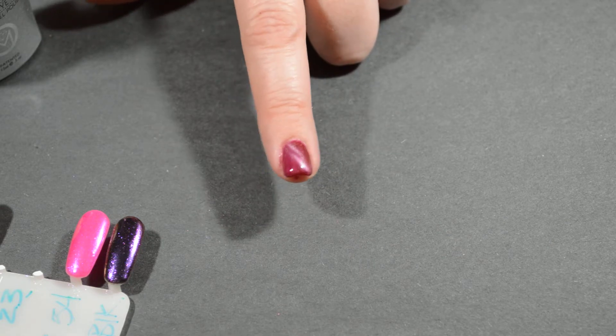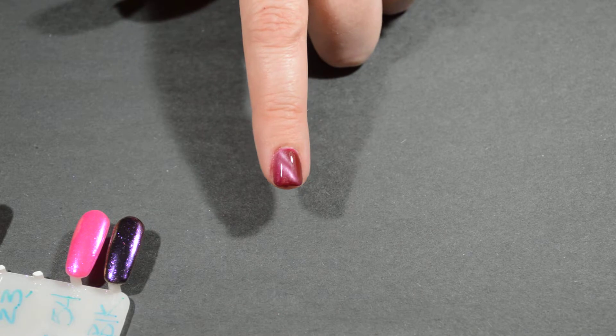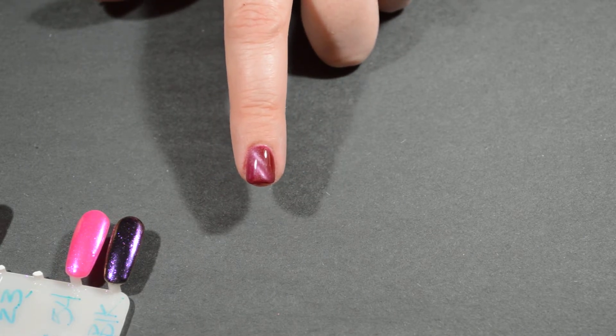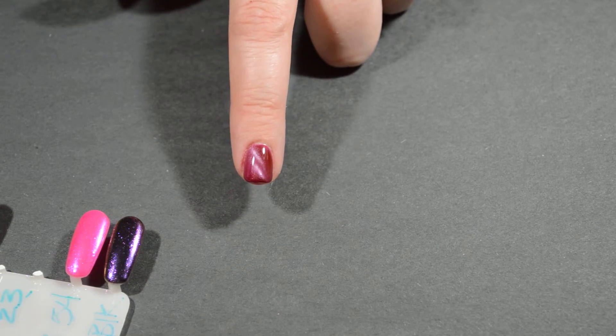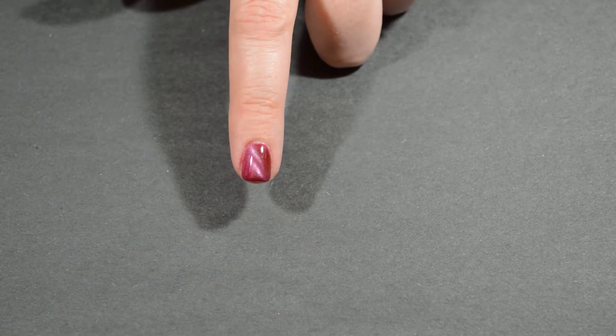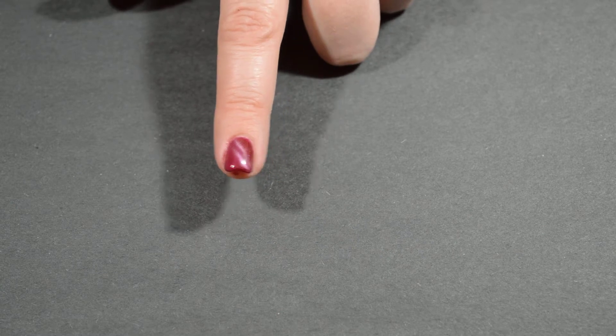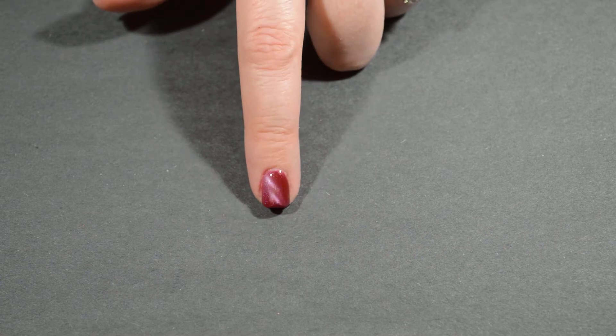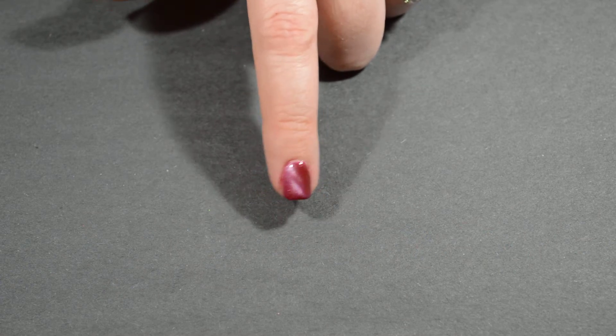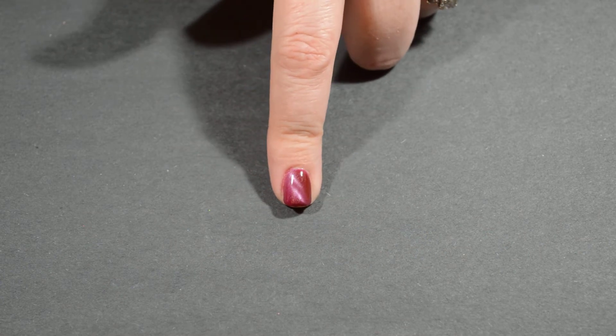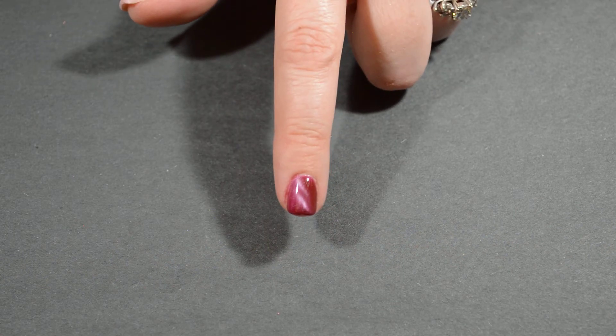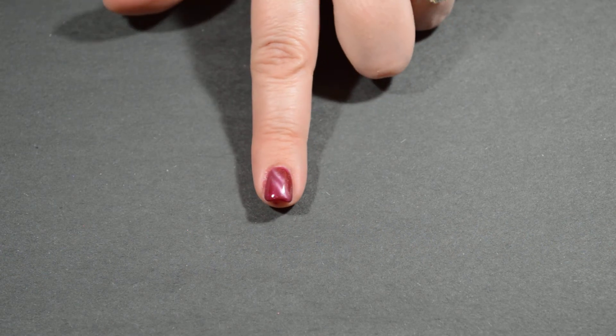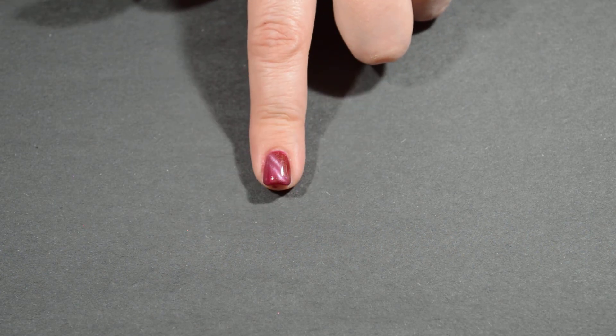So that is basically how you do the cat eye polish. It is sometimes a good upcharge if you upcharge clients on things. I know the salon I worked at charged $10 extra to do the cat eye polish on top of the $10 extra just for the gel, so on top of the acrylic nails the cat eye would have been a $20 upcharge. It did not stop people from doing it, let me tell you. It is a beautiful polish.